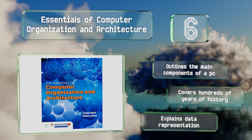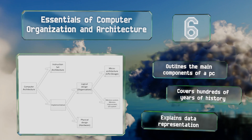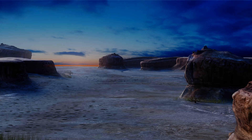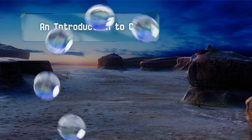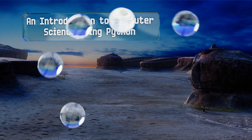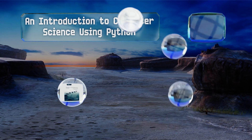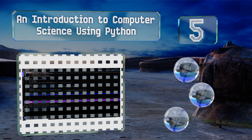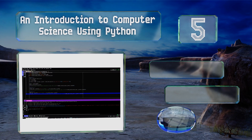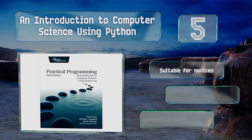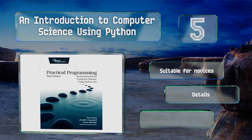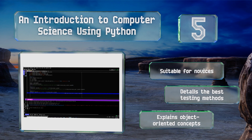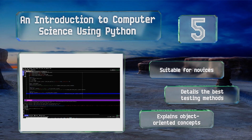It covers hundreds of years of history. Halfway up our list at number five, An Introduction to Computer Science Using Python won't just teach you code-specific information — though you will certainly get a lot of that — but it also covers a range of other issues all programmers need to know, such as how and why to document your code. It's suitable for novices, details the best testing methods, and explains object-oriented concepts.